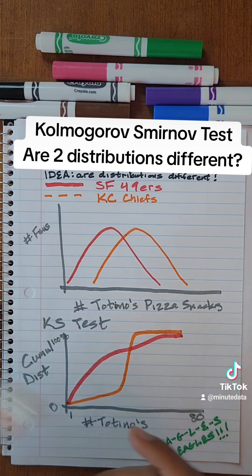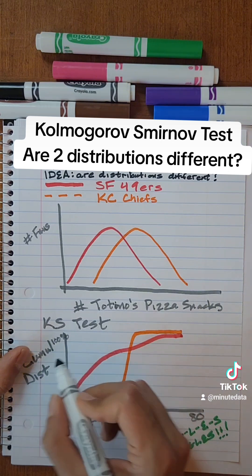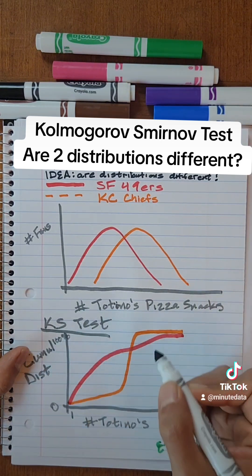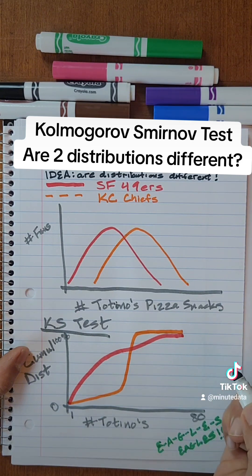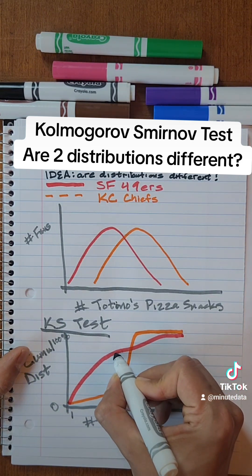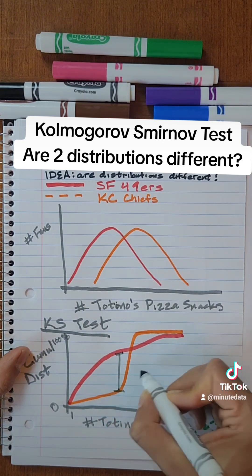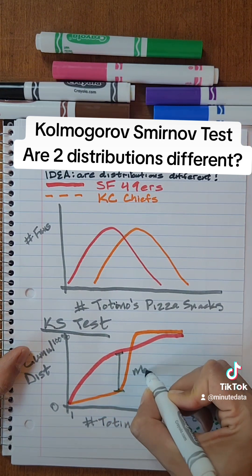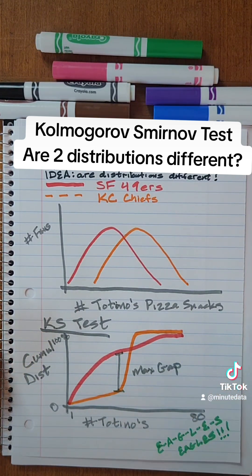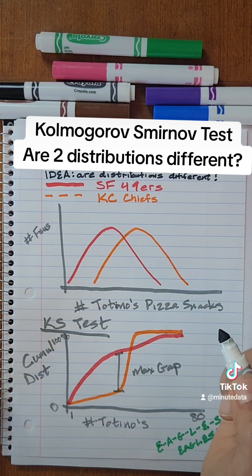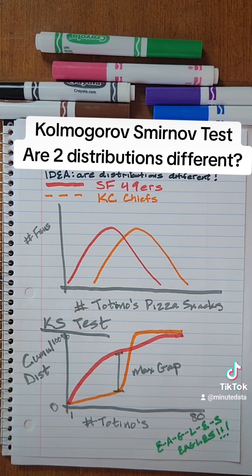How does this test actually tell you whether the distribution is different or not? In the KS test, it looks at the gap between the cumulative distribution functions. What it's going to do is take the maximum gap, and based on the maximum gap, go to a reference table and see if that maximum gap is considered statistically different or not. And that is an example of Kolmogorov-Smirnov.